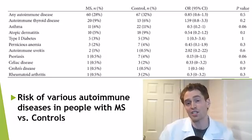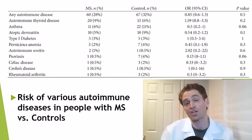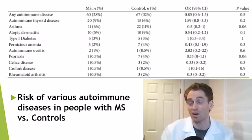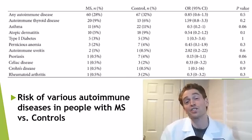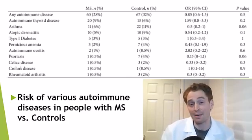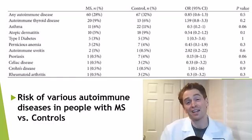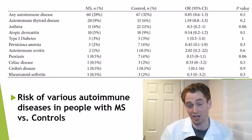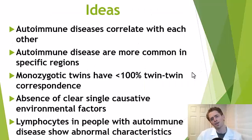The one exception is uveitis — various studies suggest that people with MS are more likely to get uveitis. But for most common autoimmune diseases like lupus and rheumatoid arthritis, there's no increased risk if you have MS. Nonetheless, Pete is still generally right: autoimmune diseases are correlated with each other.